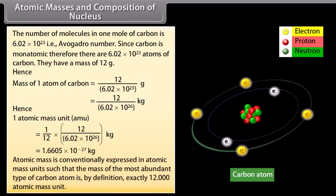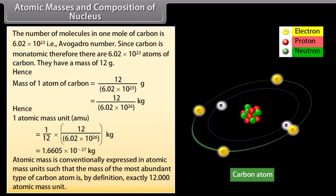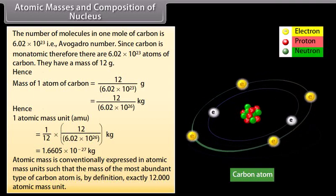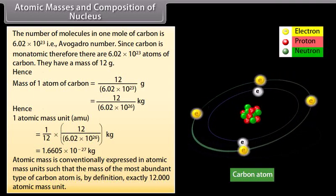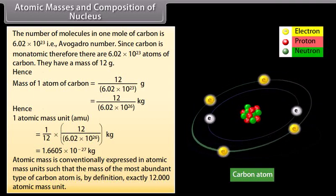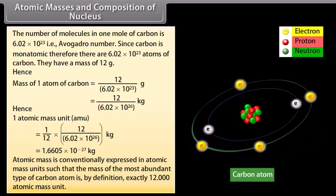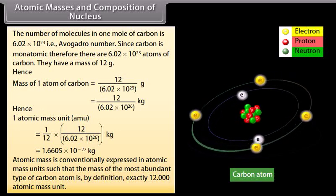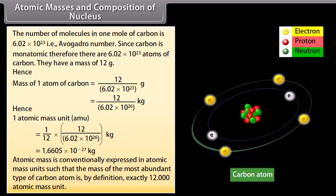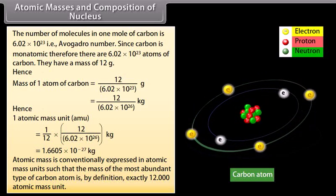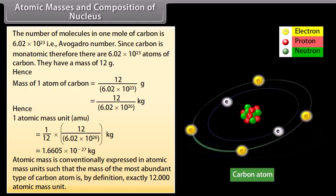Atomic mass is conventionally expressed in atomic mass units such that the mass of the most abundant type of carbon atom is, by definition, exactly 12 atomic mass units.